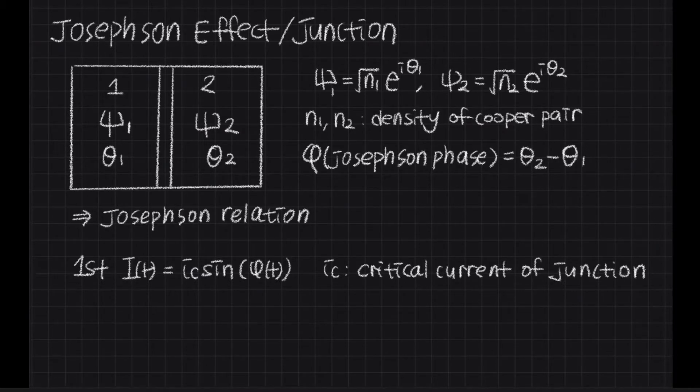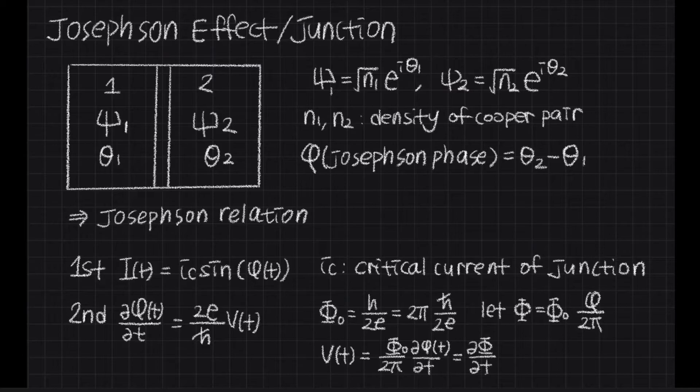First is about current and phase relation. And second is about voltage and phase relation. And IC is the critical current of the junction, which is the maximum current that can flow through the junction while maintaining the superconductor properties.